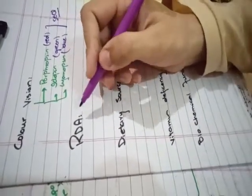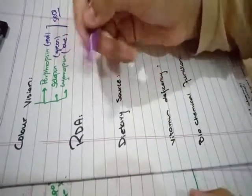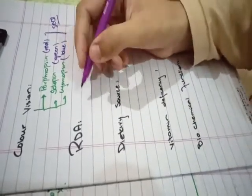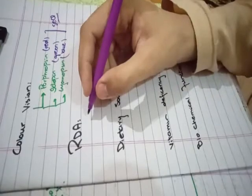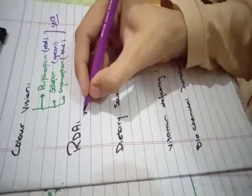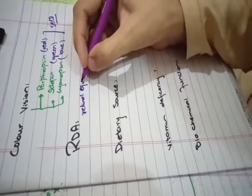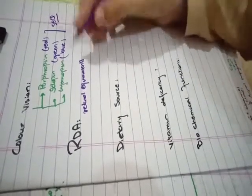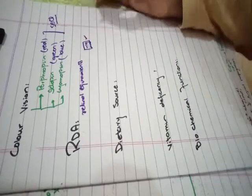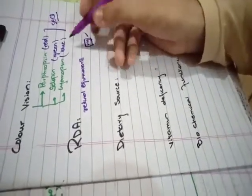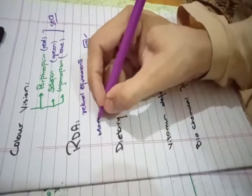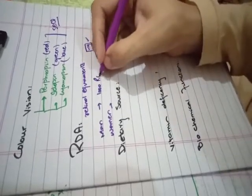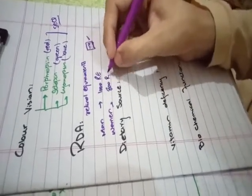The RDA — Recommended Dietary Allowance — for Vitamin A is measured in Retinol Equivalents (RE). Men require 1000 Retinol Equivalents and women require 800 Retinol Equivalents per day.